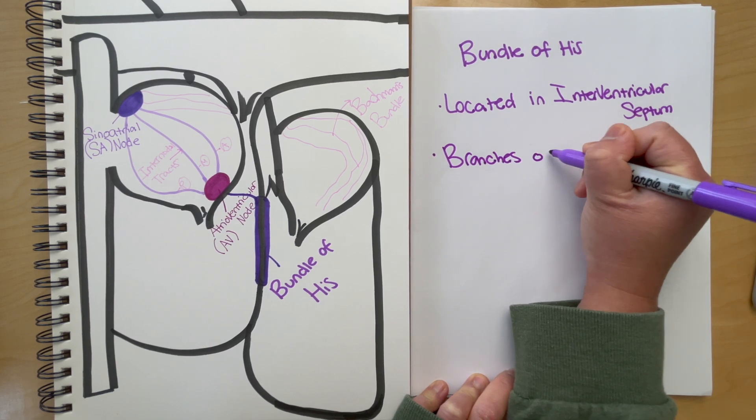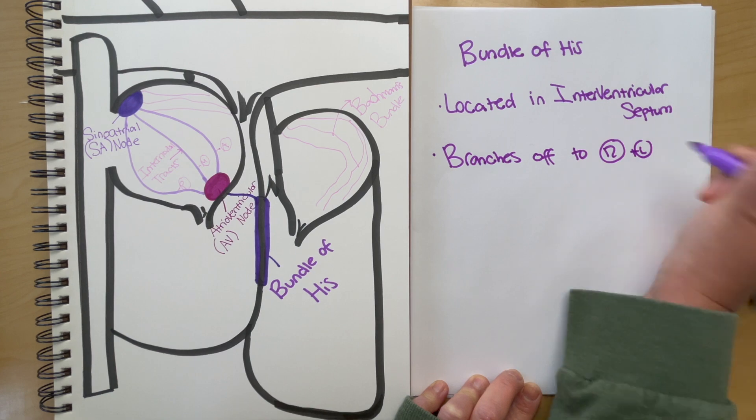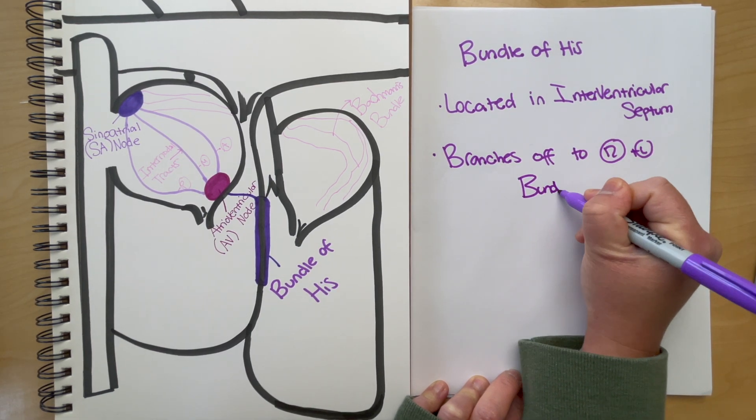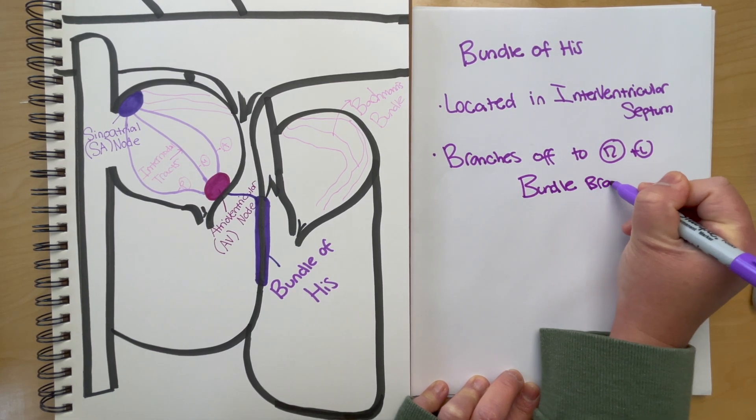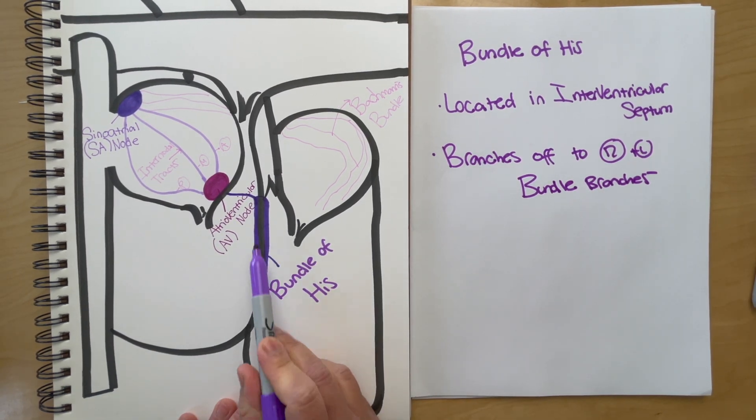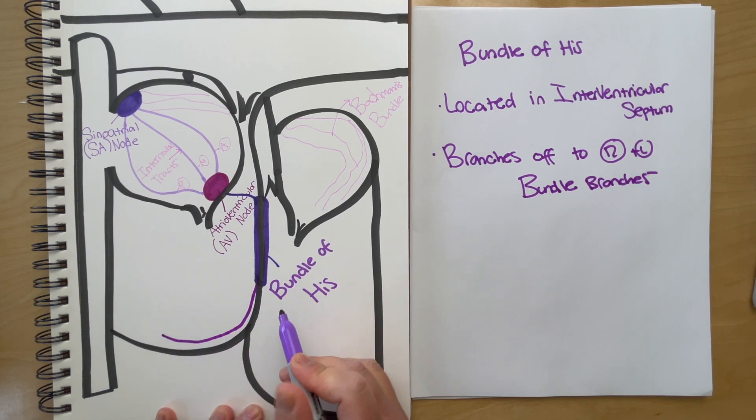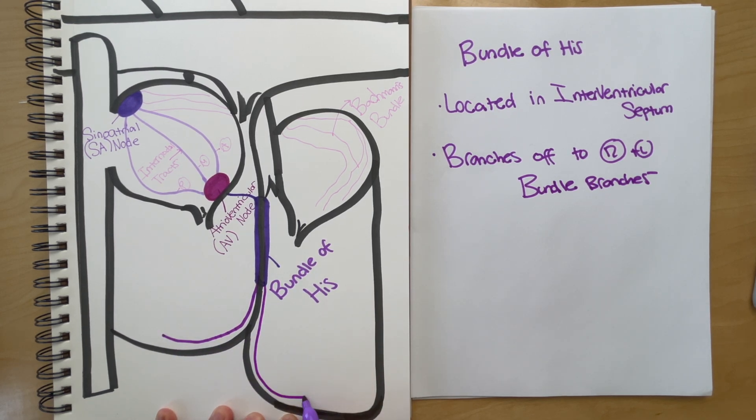Moving on, after the impulse goes to the AV node, it's going to be sent to the bundle of Hiss. The bundle of Hiss is located in the interventricular septum and branches off to the right bundle branch and the left bundle branch. Right bundle branch goes toward the right side of your heart and left bundle branch goes toward the left side of your heart.